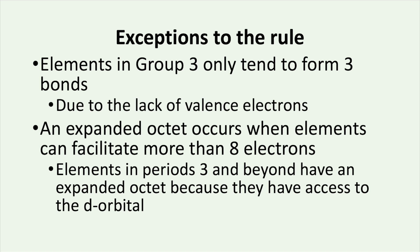Boron is one such exception. Typically, boron only tends to form three bonds with a total of six valence electrons. This property is mainly due to boron's small size and lack of valence electrons. On the other hand, some elements can facilitate more than eight electrons. We call this an expanded octet and you will most commonly see this with elements in periods three and beyond, such as with sulfur and phosphorus.